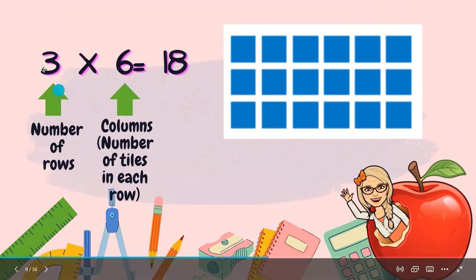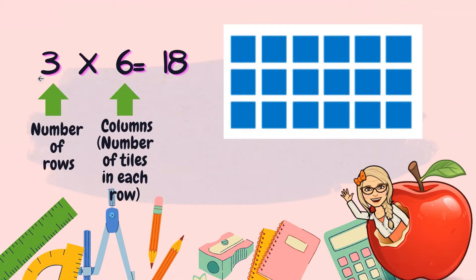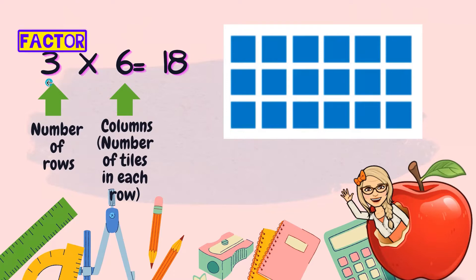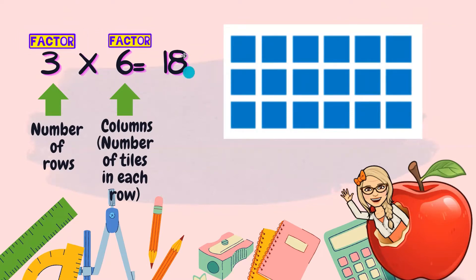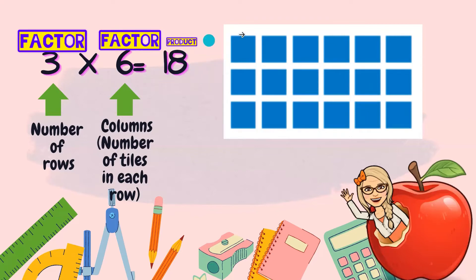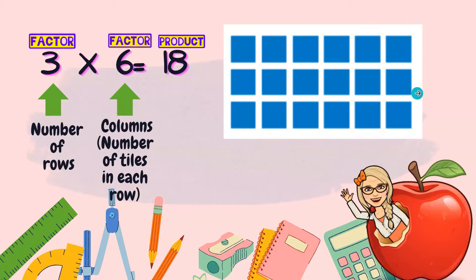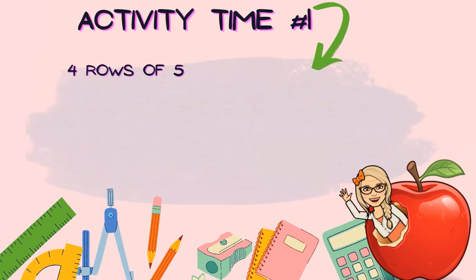We can write a multiplication sentence by counting the rows and the tiles in each row — which is the same as columns, going from top to bottom. This array has three rows, so three is the first factor. Times six tiles in each row — six is the second factor. The product, which is the total in the array, is 18. Three times six equals 18: three rows of six tiles equals 18.